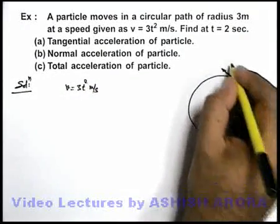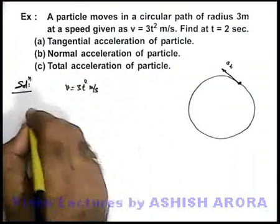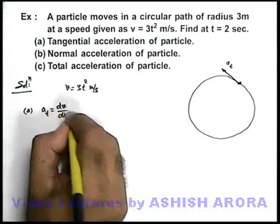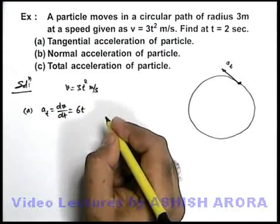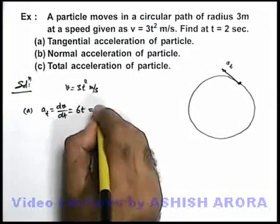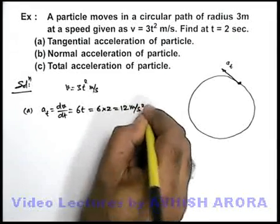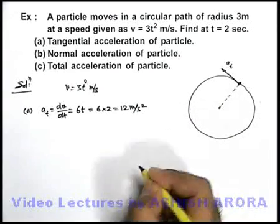So at any instant if we are required to find the tangential acceleration of particle, we can directly write in part A, tangential acceleration can be given as dv by dt. So if we differentiate it, it'll be 6t, and we are required to find it at t equal to 2 seconds. So at t equal to 2 seconds, it is 6 into 2, it is 12 meters per second square, and it'll be acting in the direction along the tangent of the circle.